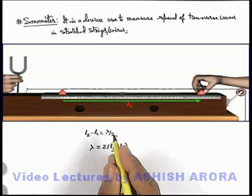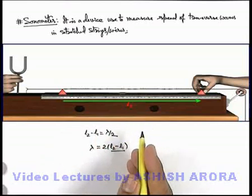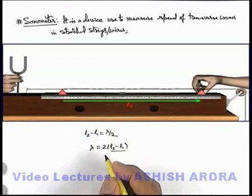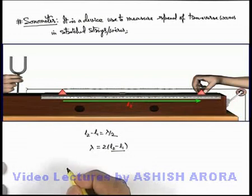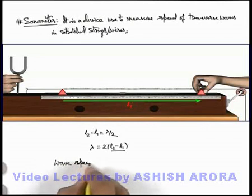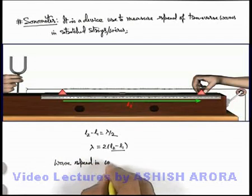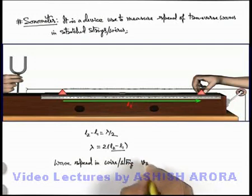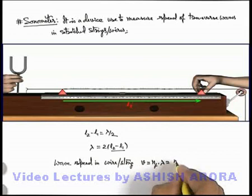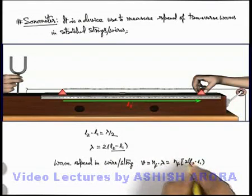Here L2 and L1 we can measure with the help of the scale fixed on the sonometer box. And the frequency of tuning fork is written there on the tuning fork. So we can directly write wave speed in wire or string can be given as frequency into wavelength, which is n_f into twice of L2 minus L1.